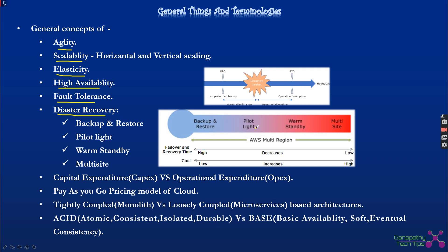For disaster recovery, high availability, and fault tolerance, AWS provides mechanisms: backup and restore, pilot light, warm standby, and multi-site. Backup and restore has very low cost but high recovery time — we take backups, store them elsewhere, and rebuild in case of disaster. Pilot light maintains only minimal infrastructure, so recovery time is slightly less than backup and restore. Warm standby keeps another system in standby mode to switch over on failure. Multi-site runs different versions of the application across multiple sites, providing zero downtime. Cost increases from backup and restore to multi-site, while failover and recovery time decreases.